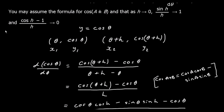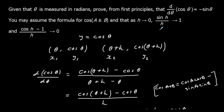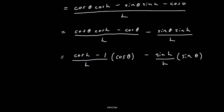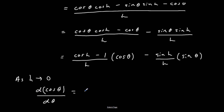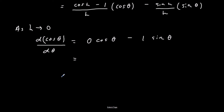Now we apply the limits. As h approaches 0, (cos h − 1)/h goes to 0 and sin h/h goes to 1. So d(cos theta)/d theta equals cos theta times 0 minus sin theta times 1, which gives minus sine theta.